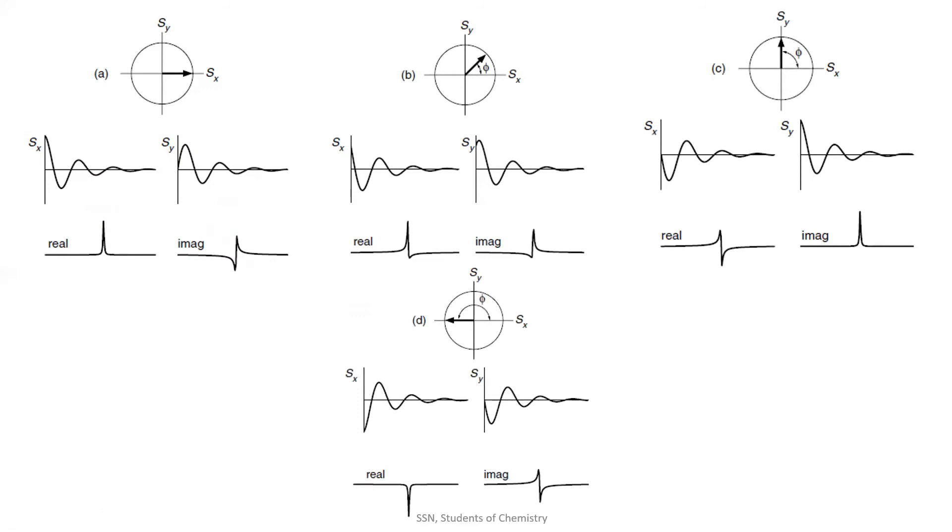We expect an absorption Laurentian in our real part because only the absorption Laurentian has maximum intensity. The deviating dispersion Laurentian goes from positive to negative and is of no use in NMR. The dispersion Laurentian is helpful only in the case of ESR and EPR to find the electron density around an atom. Here, we get an absorption Laurentian in our real part when our magnetization is present only in the x-axis.